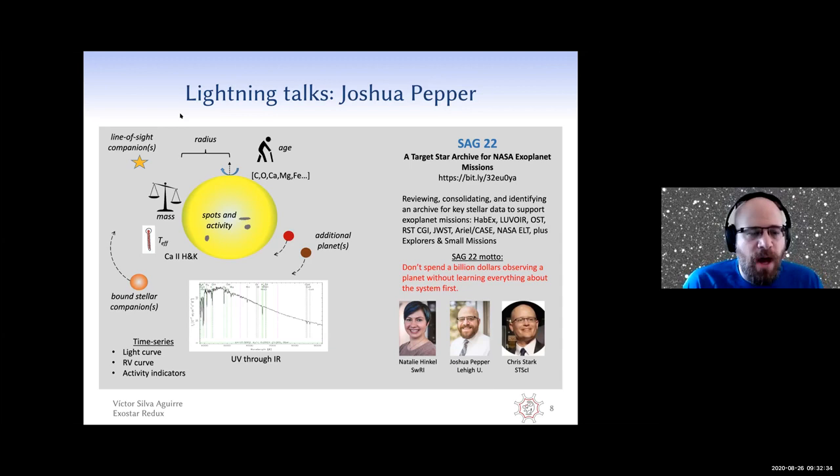That includes everything from mass radius effect of temperature to composition, the presence of spots and activity, the presence of line of sight companions and bound companions, full spectra from the ultraviolet all the way through the IR, and time series of observations, both photometric, spectroscopic, and activity indicators over time to understand the context of these planets.